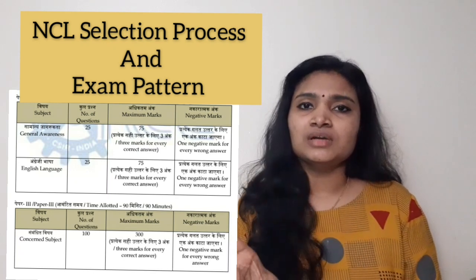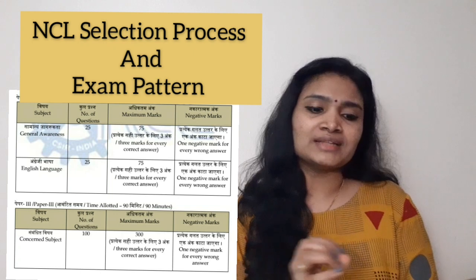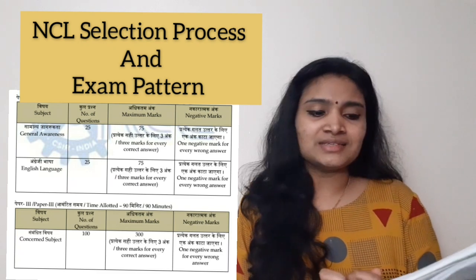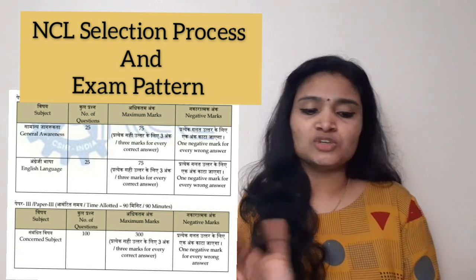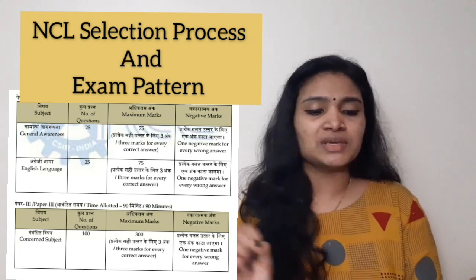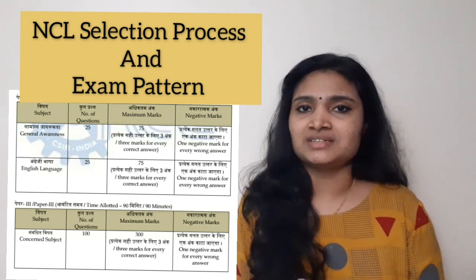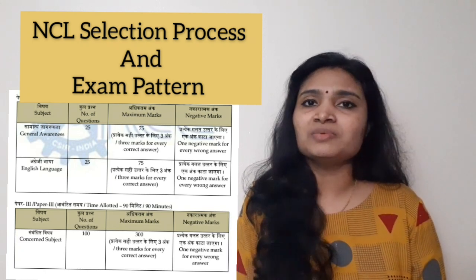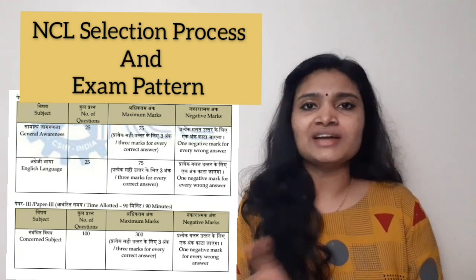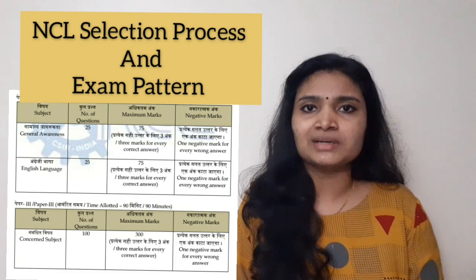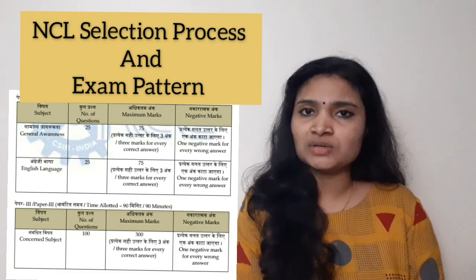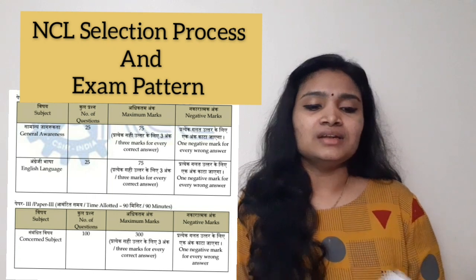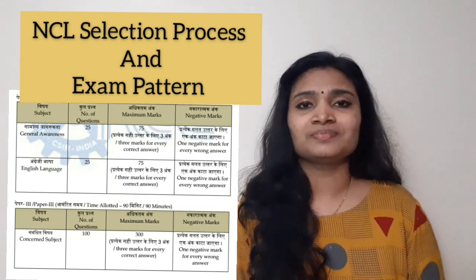For Paper 3, Technical Assistant candidates must answer subject-related questions from their respective diploma trade. There are 100 questions worth 300 marks, with three marks per correct answer and one mark deducted for wrong answers. The time duration is 90 minutes. As with the Technical Officer, Paper 1 is only a benchmark for qualifying to Papers 2 and 3, on which the final selection list is based.